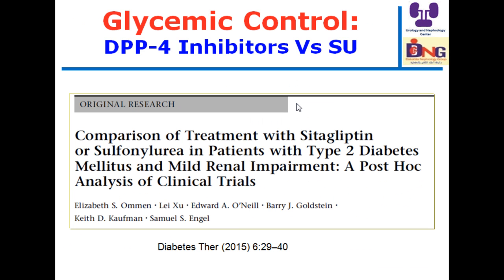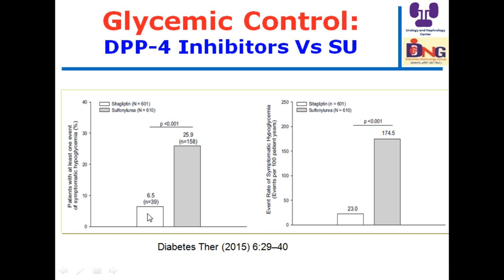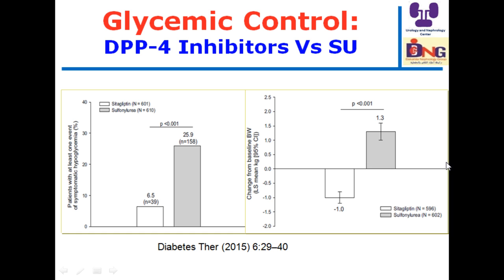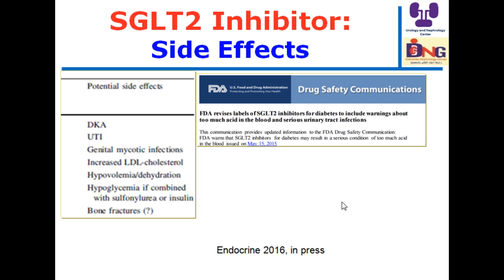Comparing DPP4 inhibitors and sulfonylureas: in one study, sitagliptin (DPP4 inhibitor, white bars) versus sulfonylurea (gray bars) clearly shows that sulfonylurea use is associated with more hypoglycemia. Furthermore, sulfonylurea is associated with weight gain, while DPP4 inhibitors are associated with weight loss — an additional advantage of DPP4 inhibitors over sulfonylureas.